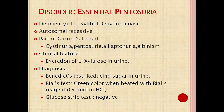Diagnosis of essential pentosuria is based on Benedict's test, because xylulose is a reducing sugar, so it gives a positive Benedict's test. It is not glucose, so a glucose strip test is negative — remember that. Bial's test is also positive: the pentose sugar reacts with Bial's reagent (orcinol in HCl) and gives a green color when heated.